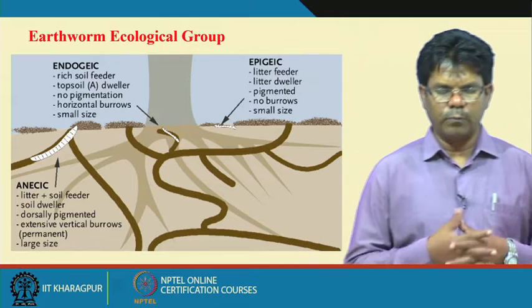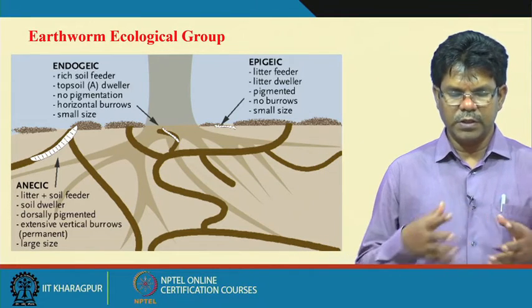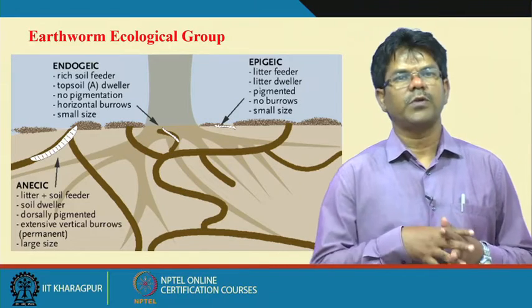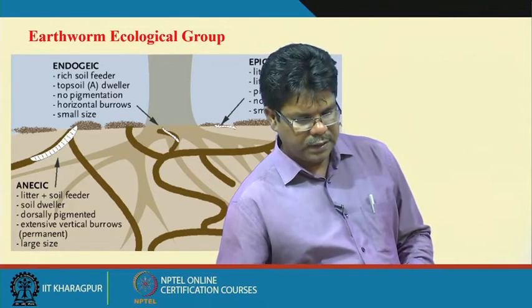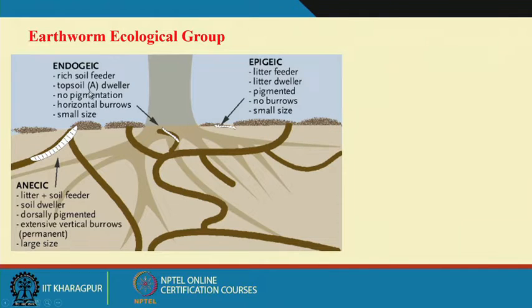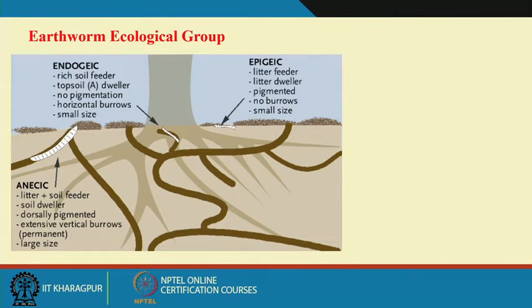Earthworms are the workforce in the vermicomposting process. There are three ecological groups of earthworms: epigeic, endogeic, and anecic. The epigeic earthworm feeds on litter — they do not feed on soil. They live on the litter, are pigmented reddish-brown, and consume only leafy materials or litter. This epigeic earthworm is most suitable for the vermicomposting process.